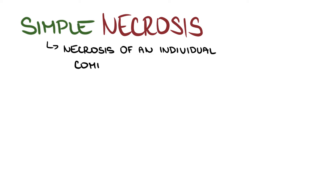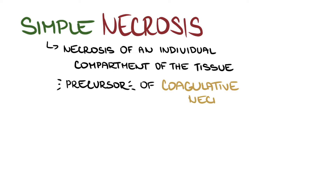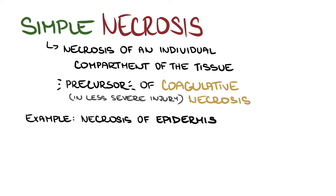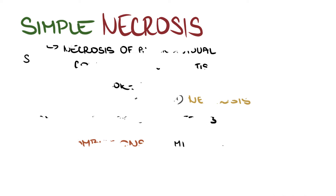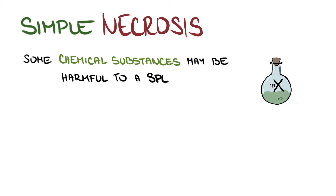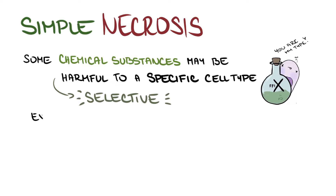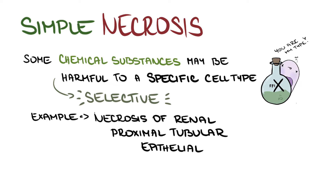Sometimes you may come across the term simple necrosis. Simple necrosis represents necrosis of an individual compartment of the tissue. It may appear as a precursor of coagulative necrosis in cases of less severe injury. A typical example is isolated necrosis of the epidermis in a patient with combustions of a milder degree. In some instances, necrosis of an individual tissue compartment is permanent because some chemical substances may be harmful only to a specific cell type. Such necrosis is called selective. A typical example is necrosis of renal proximal tubular epithelial cells in patients with corrosive sublimate poisoning.